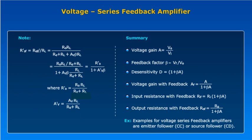For summarizing these values: voltage gain is equal to V0 by VI; feedback factor beta is equal to VF by V0; desensitivity is (1 plus beta A); voltage gain with feedback AF is equal to A by (1 plus beta A); input resistance is RI into (1 plus beta A) — series mixing increases the input resistance; and ROF is equal to R0 by (1 plus beta A). Examples of this voltage series feedback amplifier are the emitter follower circuit in BJTs and the source follower, which is a common drain amplifier, in FETs.